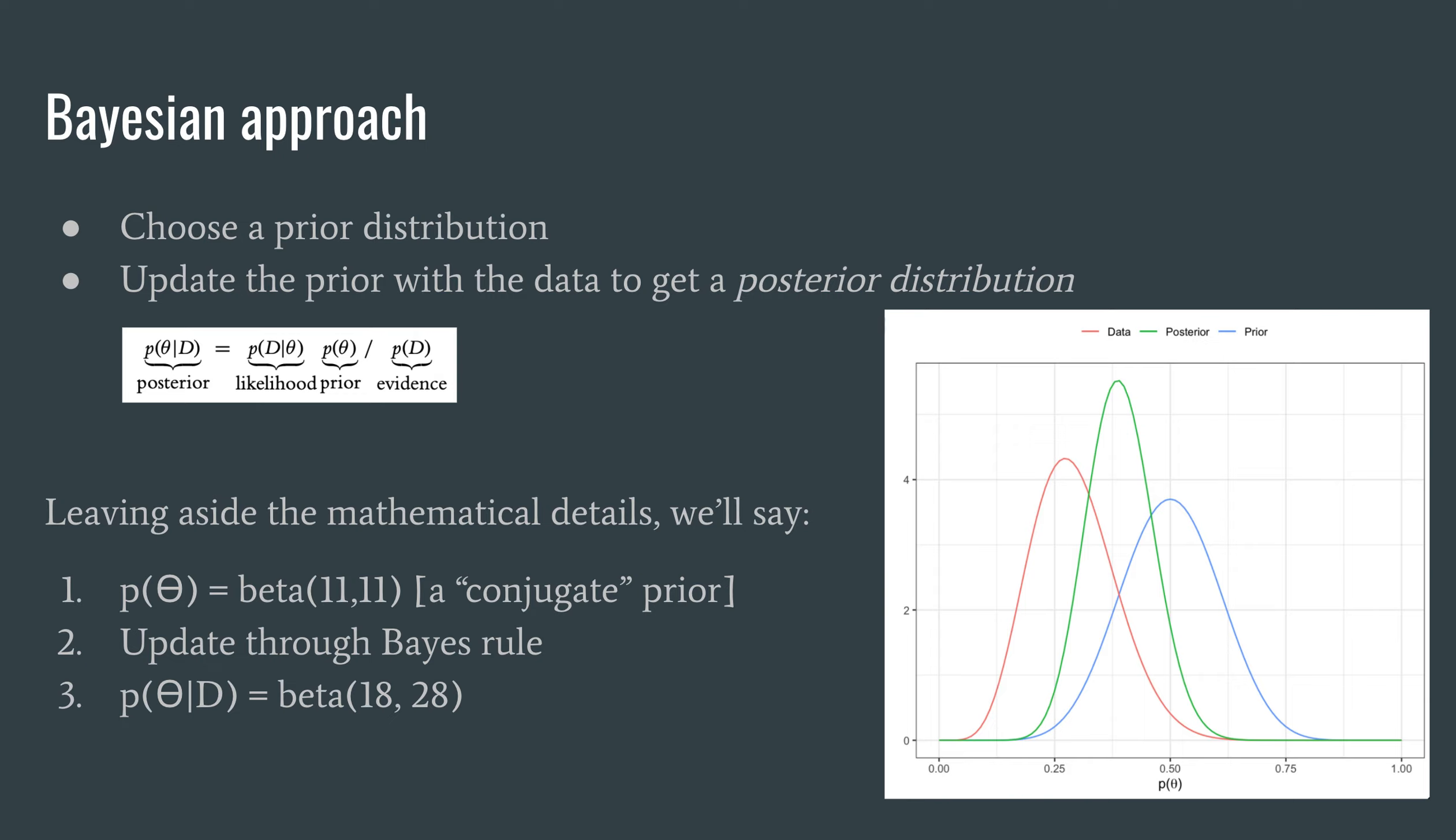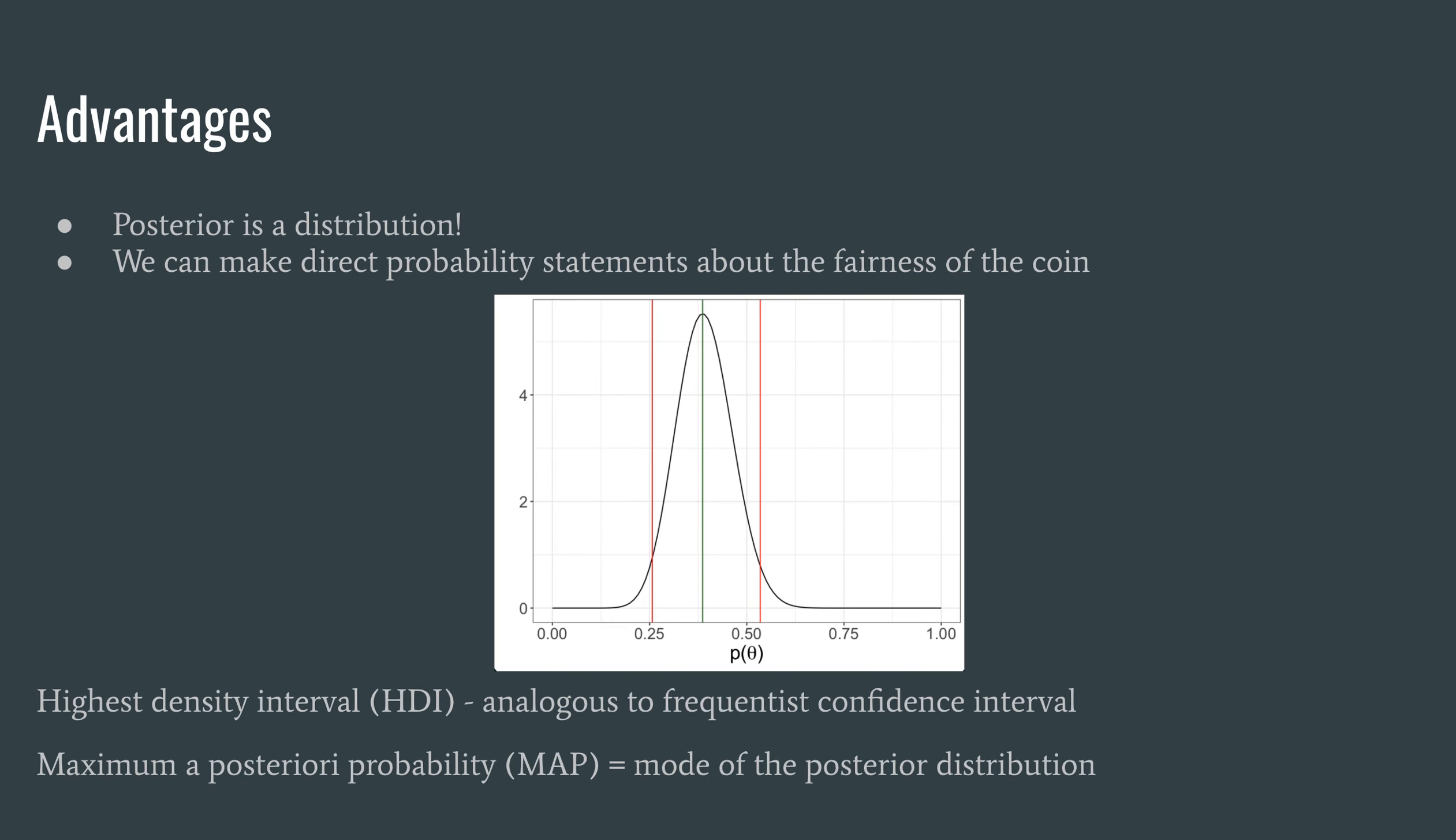So the aspect of the Bayesian approach that I want to highlight is that the posterior is a distribution, and because it is a distribution we can make direct probability statements about the fairness of the coin.